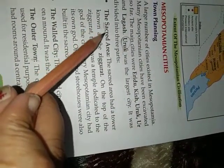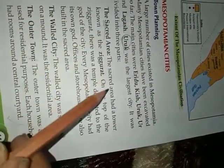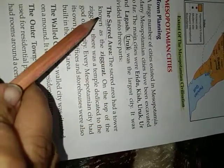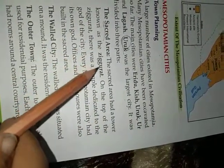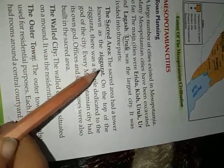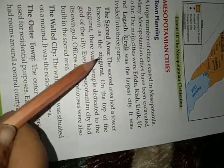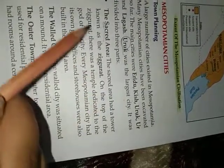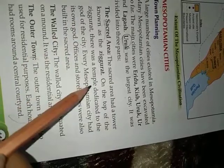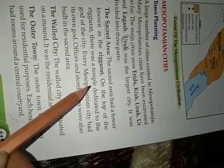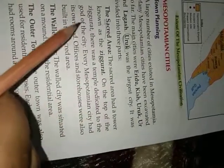Uruk was the largest city. It was divided into three parts: the Sacred Area, the Walled City, and the Outer Town. The Sacred Area — 'sacred' means pavitra (holy). The Sacred Area had a tower known as the Ziggurat (Jagrat).